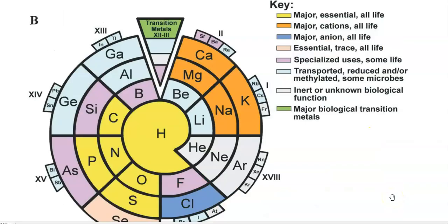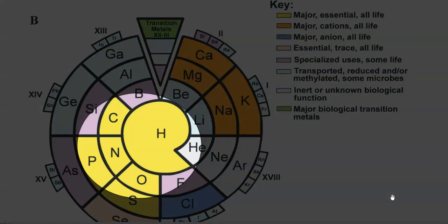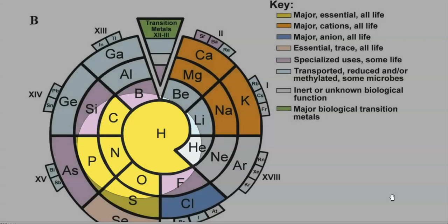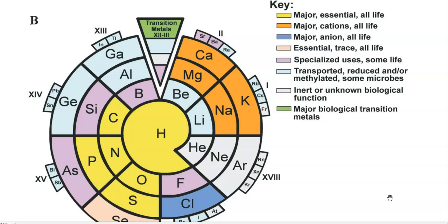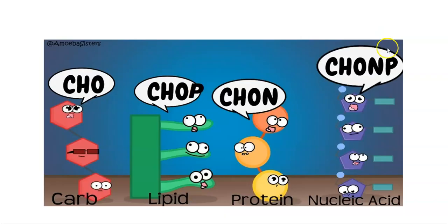The nutrients required for microorganisms can be divided into major and essential nutrients for all life forms. That includes carbon, oxygen, nitrogen, phosphorus, and hydrogen. These elements serve as important components in forming the different kinds of macromolecules or biomolecules.